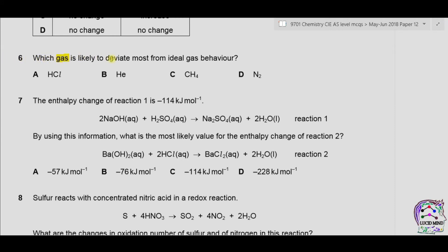Question 6: Which gas is likely to deviate most from ideal gas behavior? An ideal gas has no intermolecular forces of attraction or repulsion between its molecules, and there is no loss of energy upon collisions. Option A is HCl. Hydrogen is partial positive and chlorine is partial negative, so we have intermolecular forces of attraction because this molecule is polar. So it will deviate from ideal gas behavior.